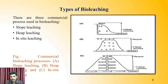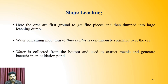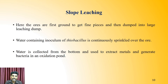There are three major commercial processes used in bio leaching: slope leaching, heap leaching, and in-situ leaching. In slope leaching, ores are first ground to fine particles and dumped into a large leaching dump. Water containing inoculum of Thiobacillus species is continuously sprinkled over the surface of the ores. Water is collected from the bottom and used to extract metals while generating bacteria in an oxidation pond. A suitable environment must be created for the growth of Thiobacillus.